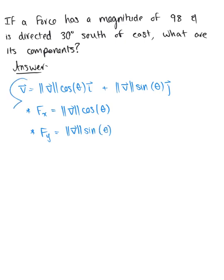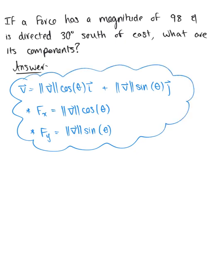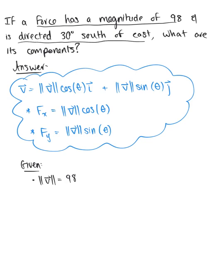This is what we'll use to solve the problem. We have that the force has a magnitude of 98, so the magnitude of vector V is 98. The force is directed 30 degrees south of east. Thinking about a unit circle on the plane, the force is directed 30 degrees south of east — 30 degrees below the positive x-axis. We want to work in radians, so that's pi over 6.